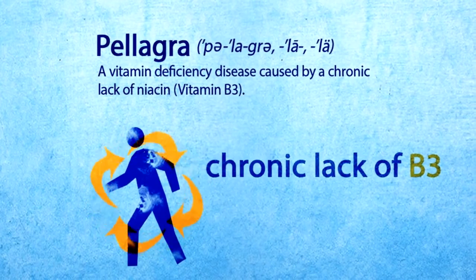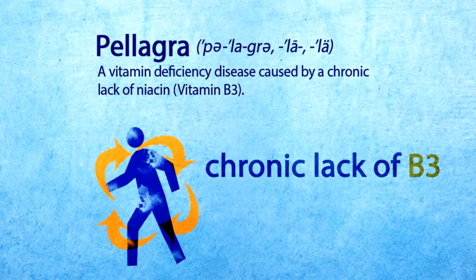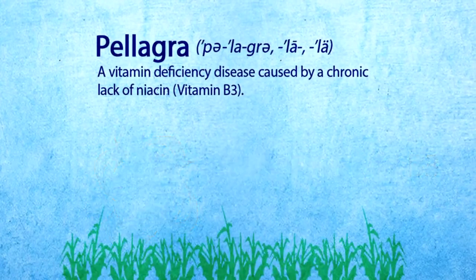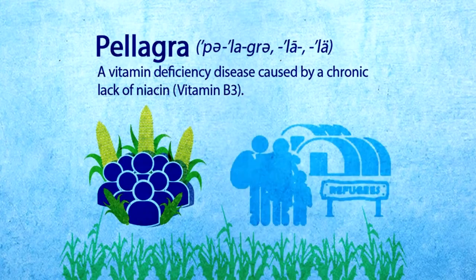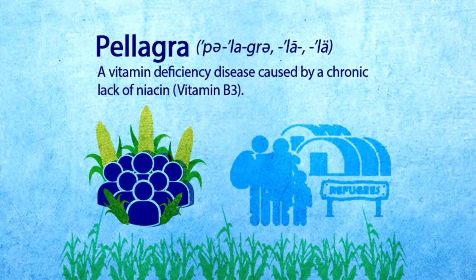Pellagra. Pellagra is a vitamin deficiency disease caused by a chronic lack of niacin, vitamin B3. Pellagra is common in people who obtain most of their food energy from maize. Pellagra frequently affects populations of refugees and other displaced people due to their unique long-term residential circumstances and dependence on food aid. Although most of these diseases are rare, they can occur through malnutrition even in this day and age.